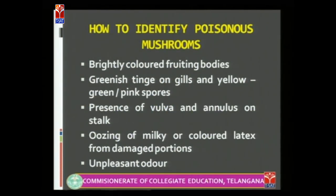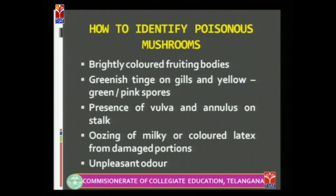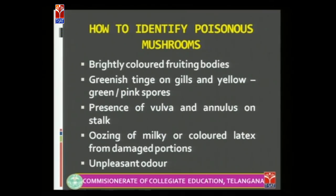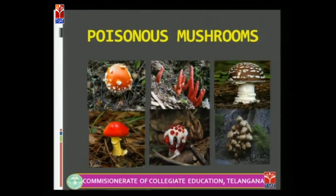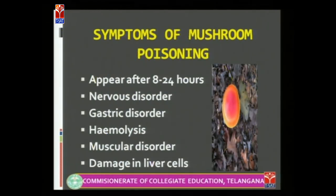We should also know how to identify poisonous mushrooms. Poisonous mushrooms are usually brightly colored; we can see a greenish tinge on gills, and spores will be yellow to green or pink in color. Usually we can see the volva and annulus on the stalk, and in some cases there is oozing of milky latex from damaged portions of the mushroom. In some cases an unpleasant odor can also be noted. We have to be careful not to consume such mushrooms.